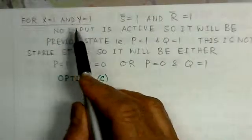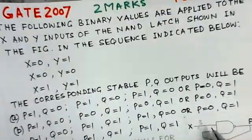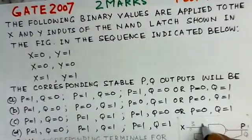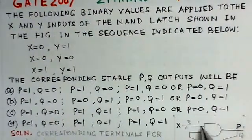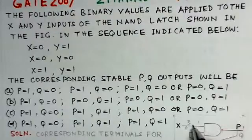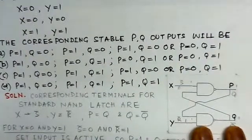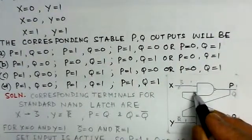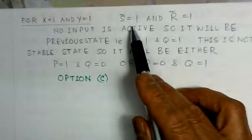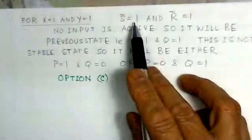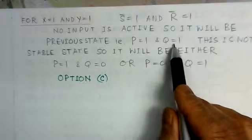Now for X=1 and Y=1, both inputs are 1. That means neither the set is active nor the reset is active — no input is active. For S-bar=1 and R-bar=1, since no input is 0, the latch will remain in the previous state. So P=1 and Q=1, which is the previous (indeterminate) state.